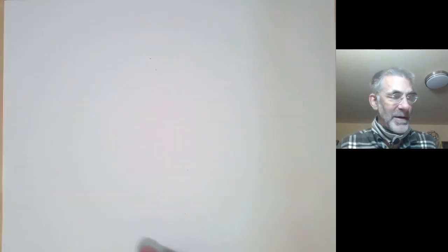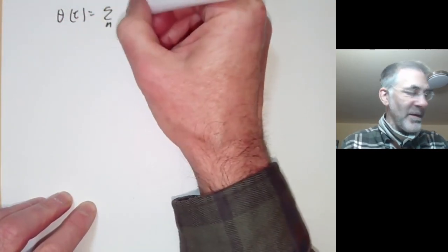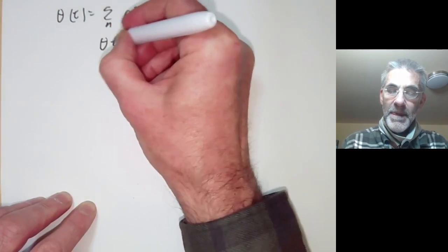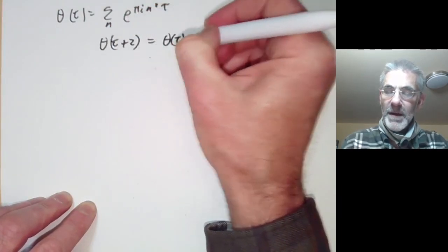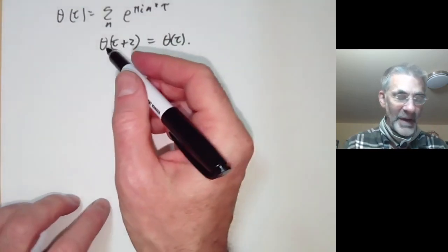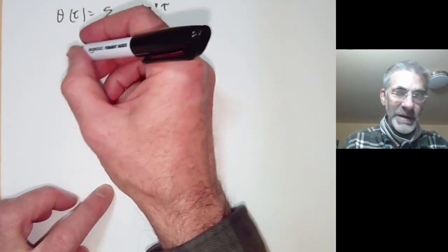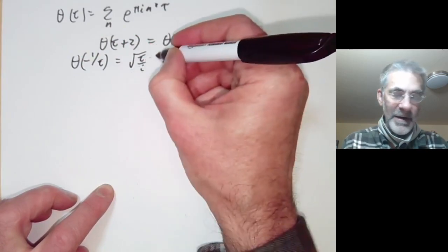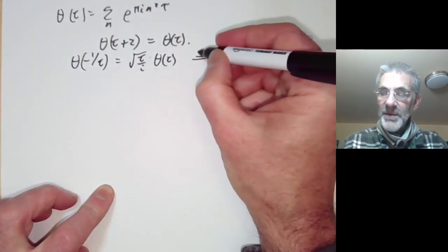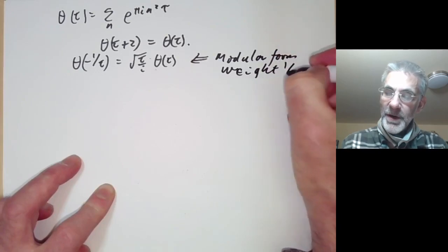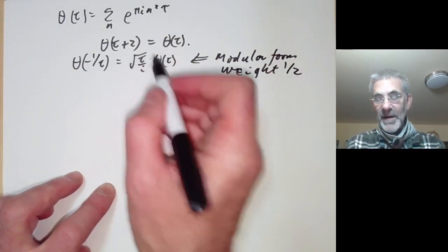Let's look at the equations this theta function satisfies. Theta of tau is the sum over n of e to the pi i n squared tau, and it's obviously invariant under tau goes to tau plus 2. It's not quite invariant under tau goes to tau plus 1, so it's not going to be invariant under the whole of SL2(Z). It also has a much more interesting functional equation: theta of minus 1 over tau equals root tau over i times theta of tau, which is what you'd expect from a modular form of weight one half, except there are some funny roots of unity around.